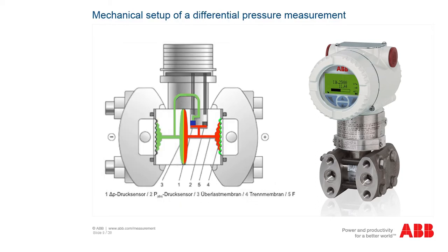The 266 pressure transmitter for differential pressure measurement has a similar setup. However, instead of the reference vacuum, a second medium transfers the pressure — also decoupled by a separating diaphragm — to a second filling fluid. The 266 multivariable pressure transmitter has a multi-sensor technology which, in addition to differential pressure measurement, also enables absolute pressure measurement for a medium.